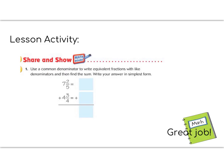Time for the lesson activity. Today's lesson activity is number 1 in the share and show section of your paper. It says use a common denominator to write equivalent fractions with like denominators. And then find the sum. Write your answer in simplest form. So if we start with the lowest common denominator, we'll make our simplifying easier. So the number that is smallest that 4 and 5 both have in common.